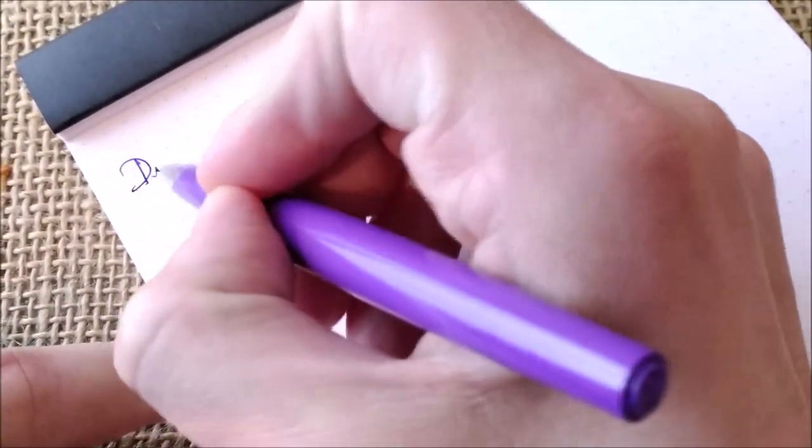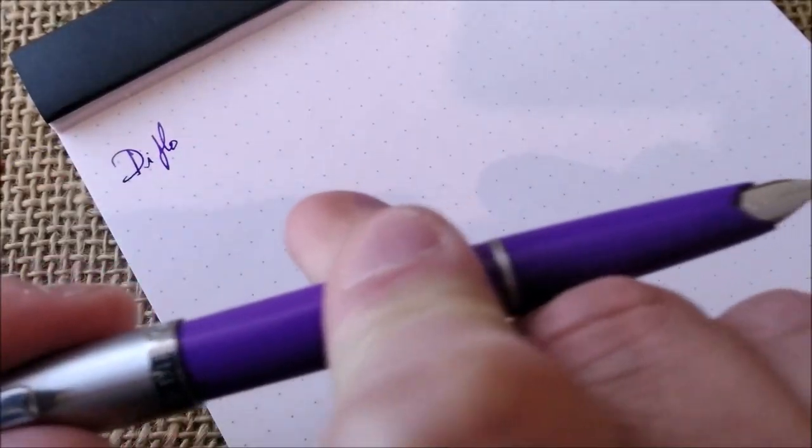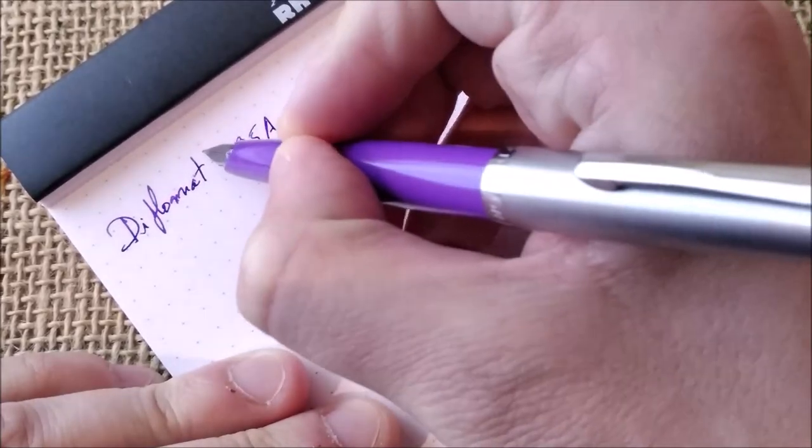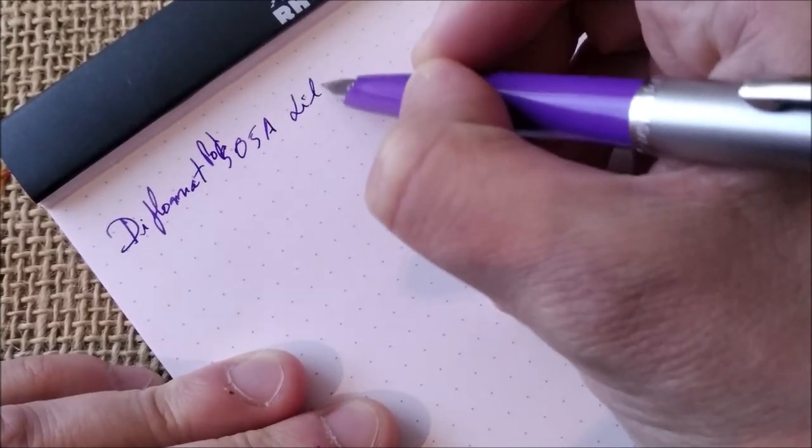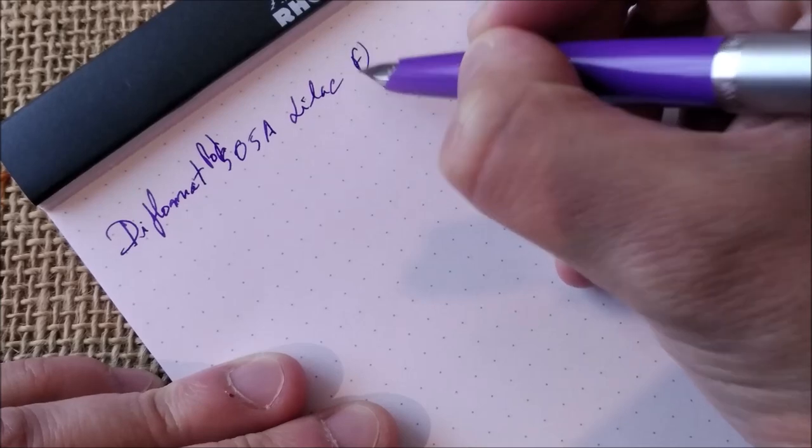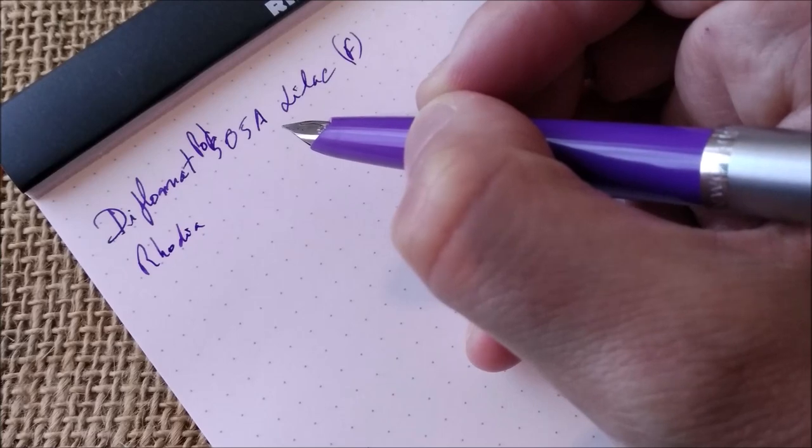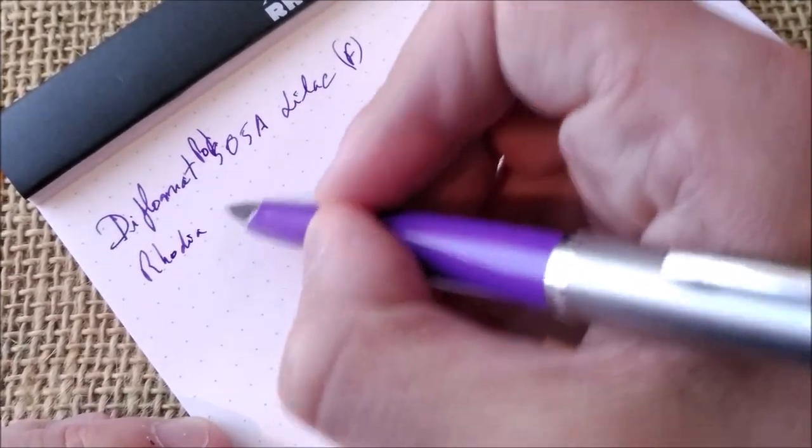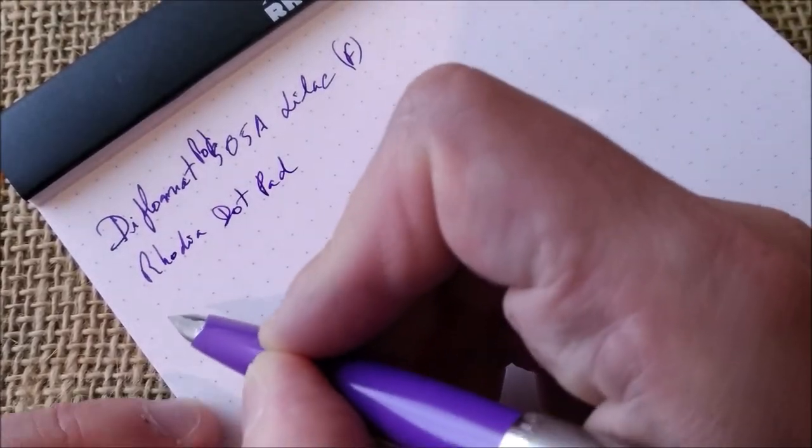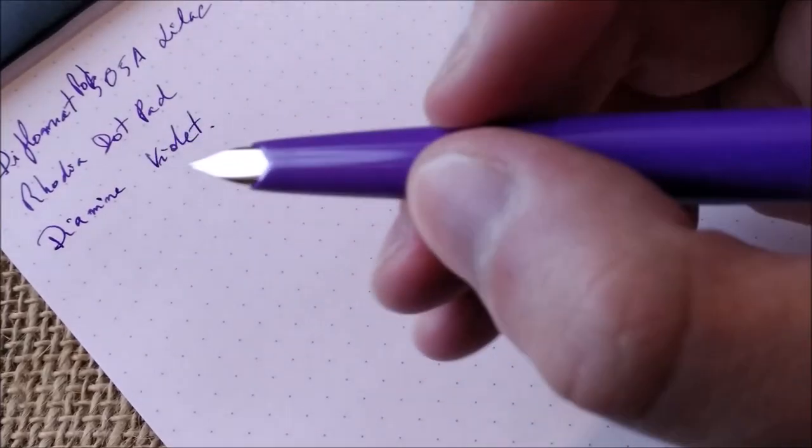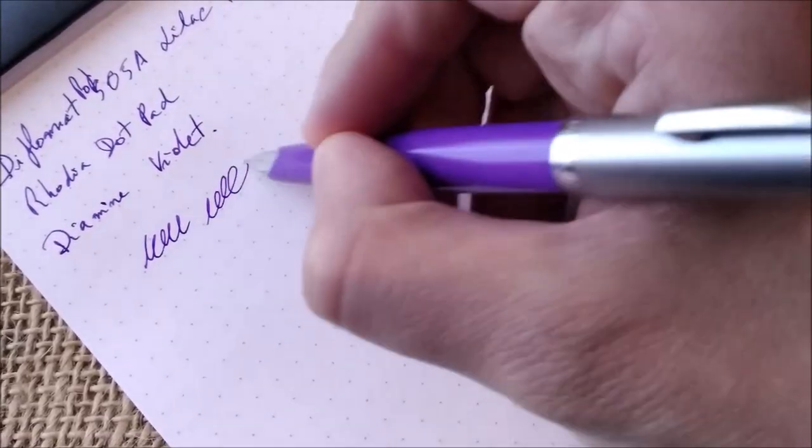Here we are with the pen and paper. I will post it because this one deserves to be posted. The Diplomat Pop 505A, this is the lilac. The nib is a fine steel nib. The paper I'm using is the usual Rhodia dot pad. The ink in this pen is Diamine Violet. The ink color matches very well the color of the pen. As you can see this pen writes really well.